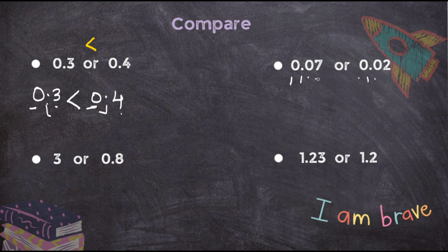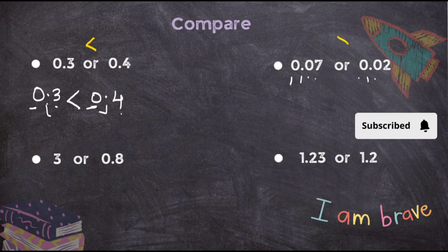Of course, 7 is big. That means 0.07 is greater than 0.02.